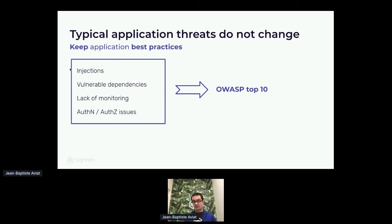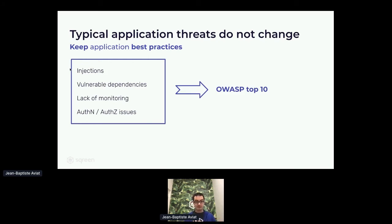Things that do not change are the typical application threats. You want to keep your application security development best practices. If you think of the OWASP top 10, you always have injections — Lambda functions talk to databases and streams, so injections are still here. They are still doing API calls, so you still have a risk of SSRF. Also, vulnerable dependencies — and this challenge is scaled 20 times. The lack of monitoring is still a big issue in the serverless world, and authorization and authentication issues are really, really important.